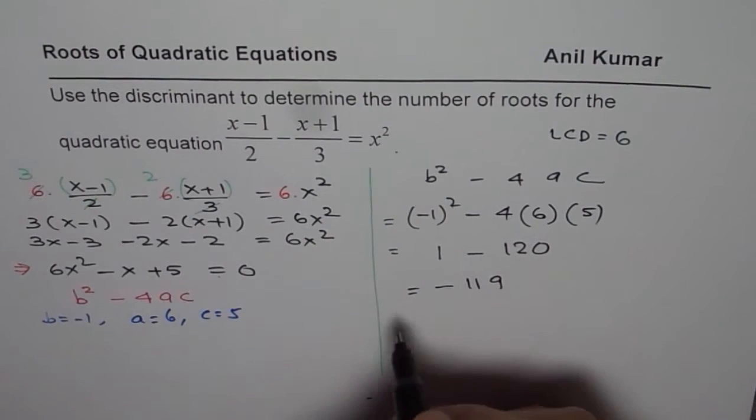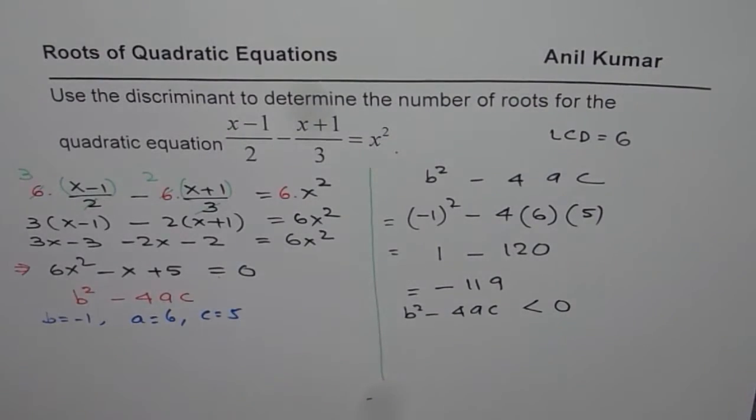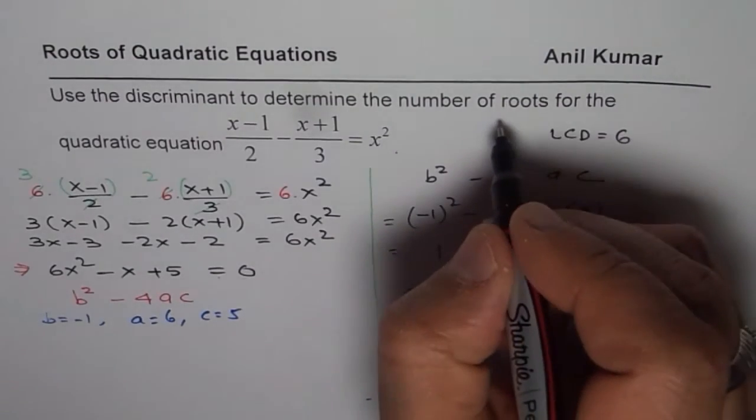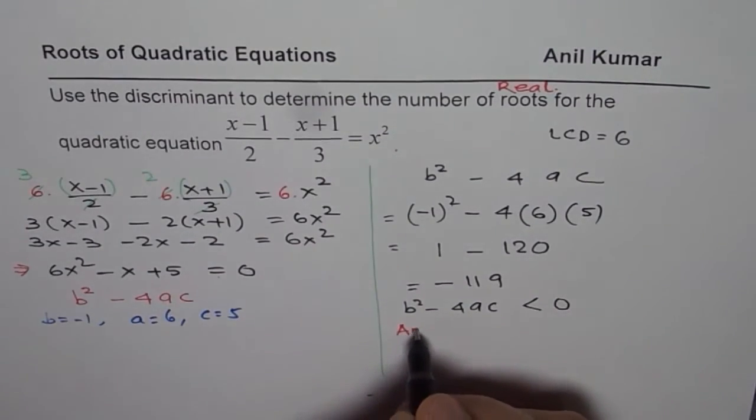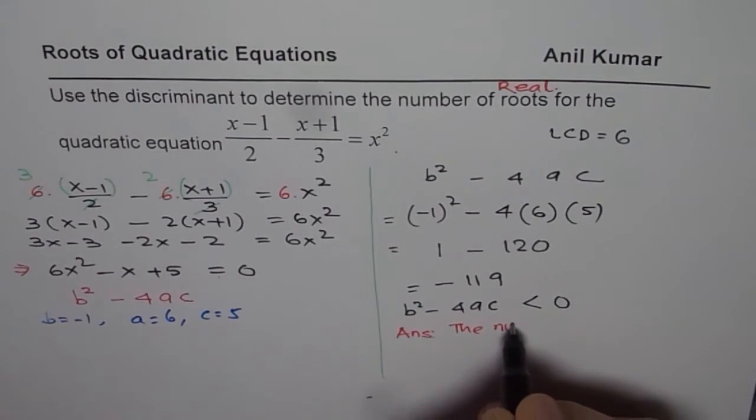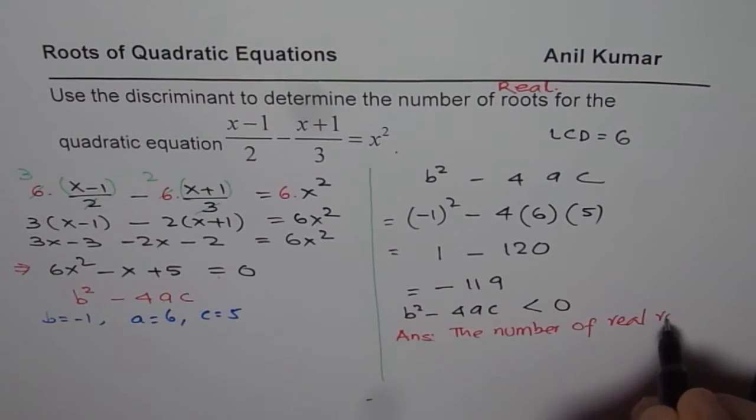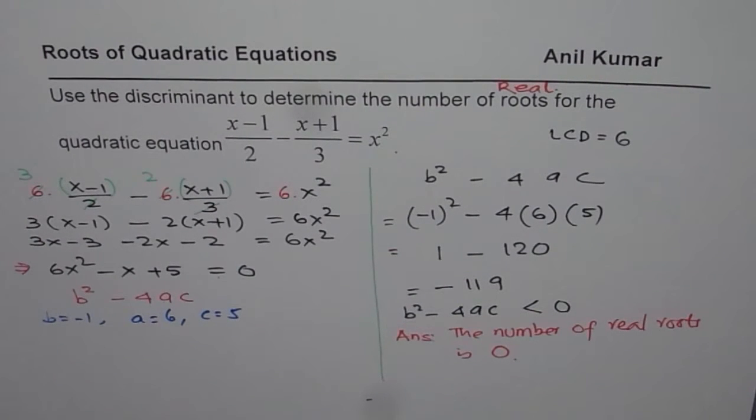Since b squared minus 4ac is less than 0, what should we conclude? The number of real roots. Let me write this real roots. So our answer is, since this is less than 0, the number of real roots is 0. So we really don't have real roots as a solution for the given equation. I hope that helps. Thank you and all the best.